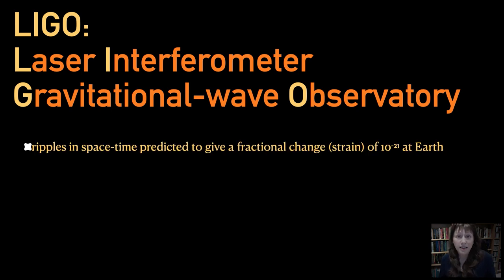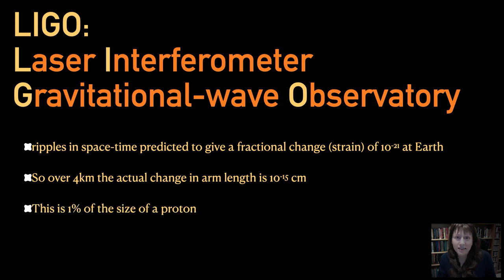LIGO is able to undertake detection experiments which can reasonably be described as challenging. The ripples in space time that LIGO is designed to observe are tiny. The fractional change, known as the strain, which needs to be measured, is as small as 10 to the power of minus 21. Over four kilometres, the actual change in arm length is 10 to the power of minus 15 centimetres. It is 1% of the size of a proton. It is 10 to the power of 11 smaller than the wavelength of light.